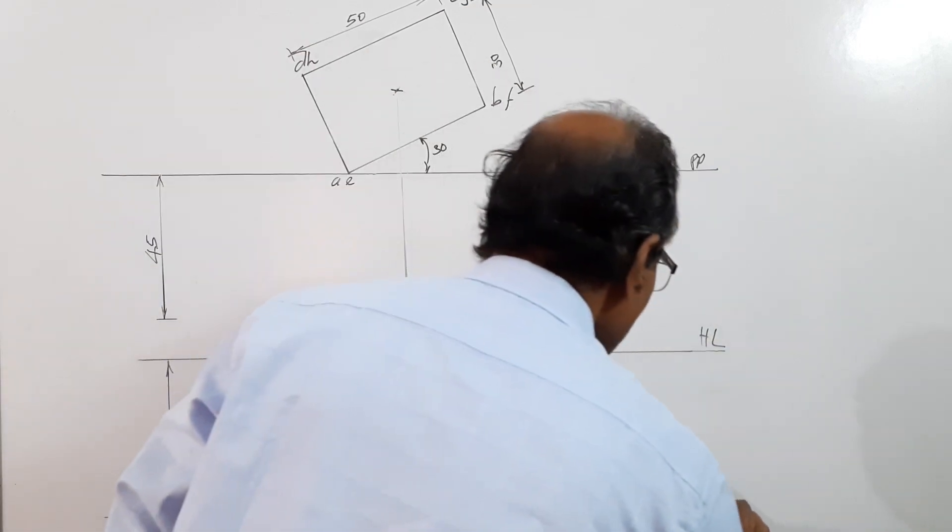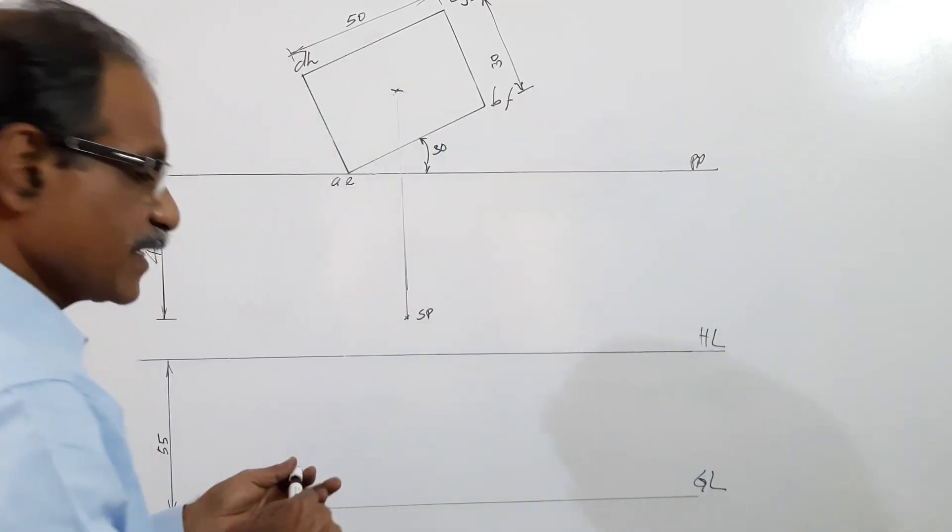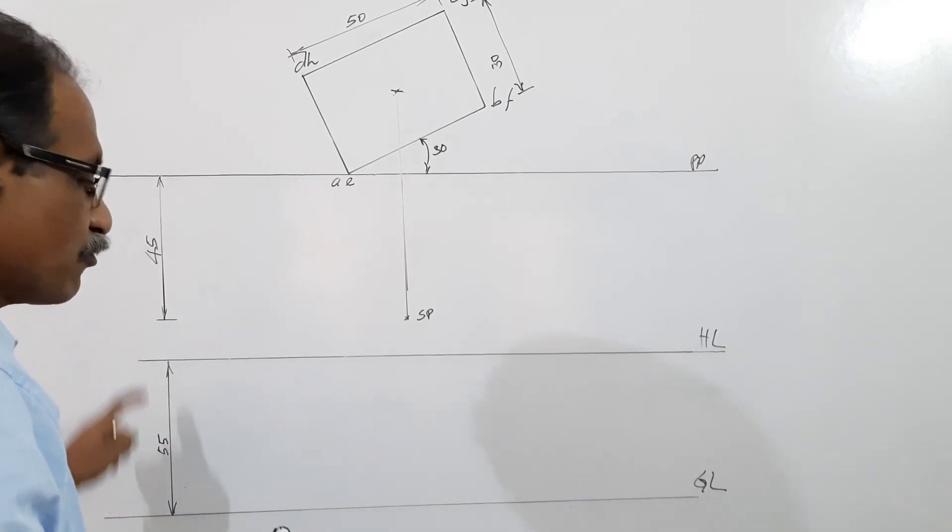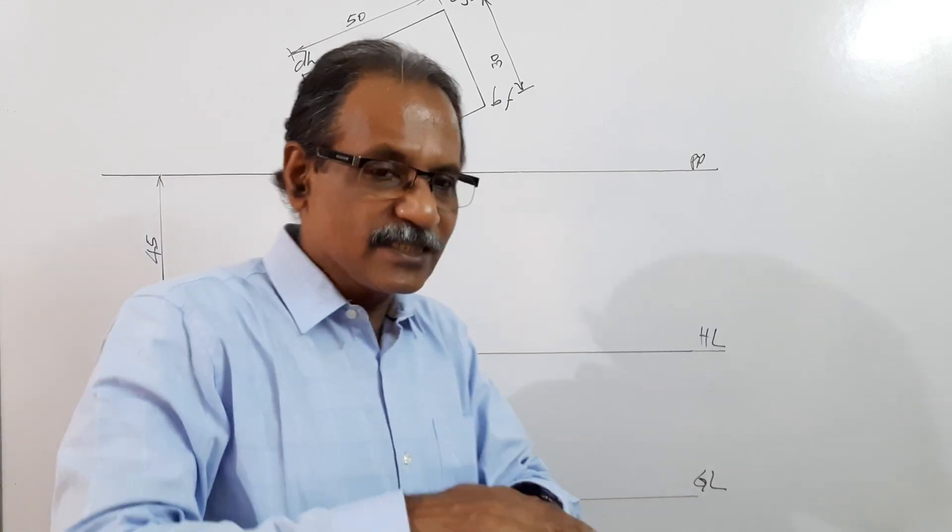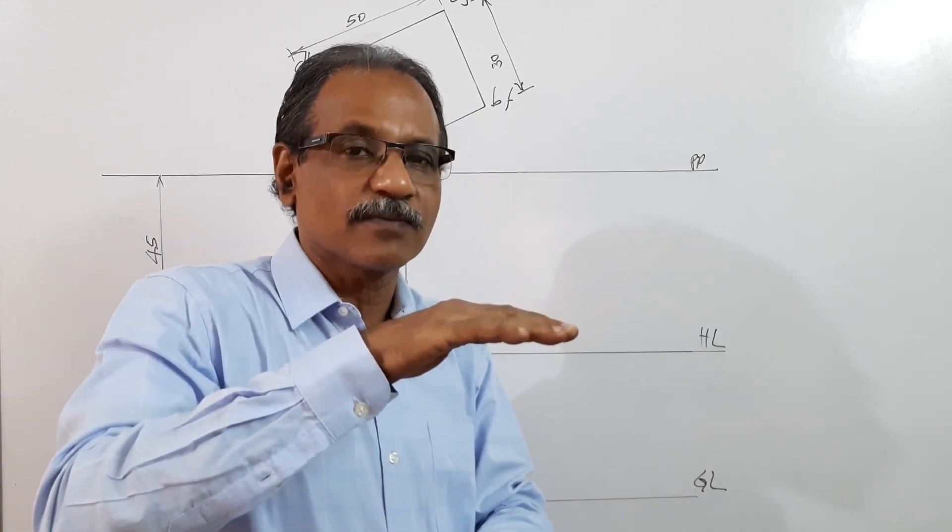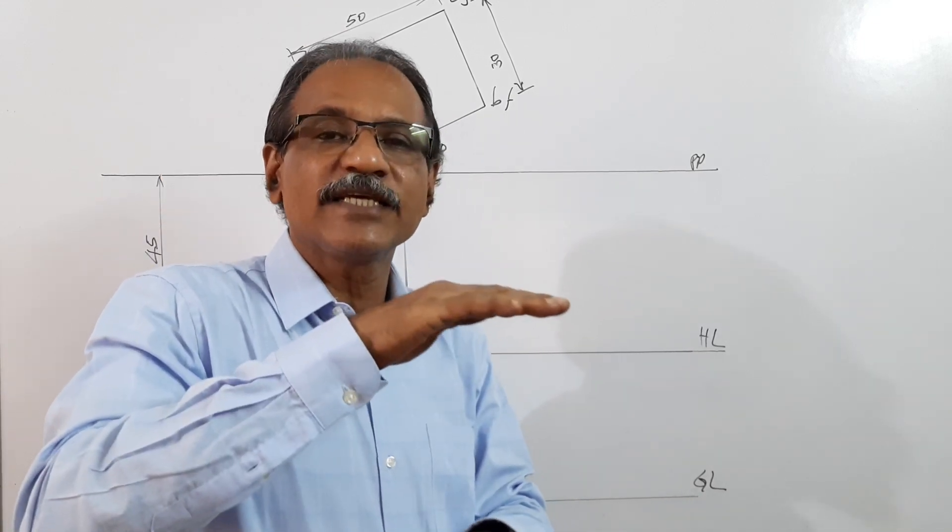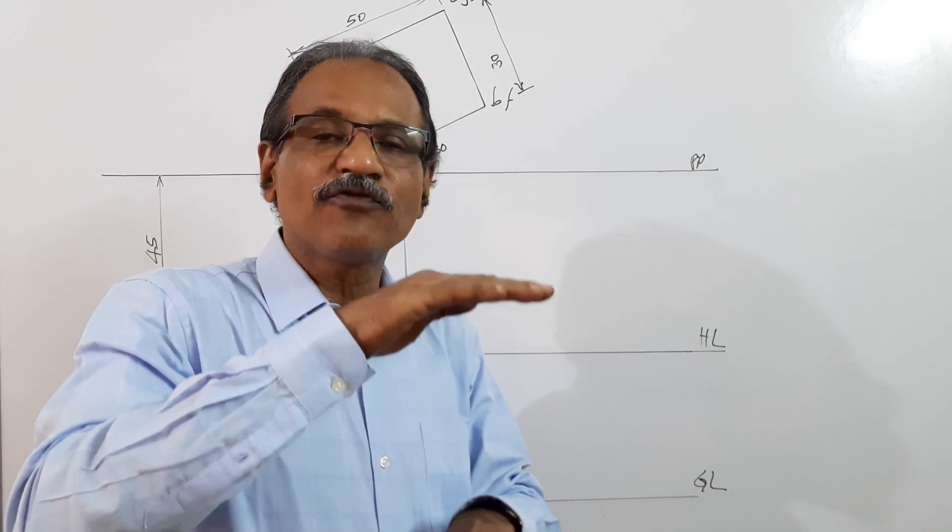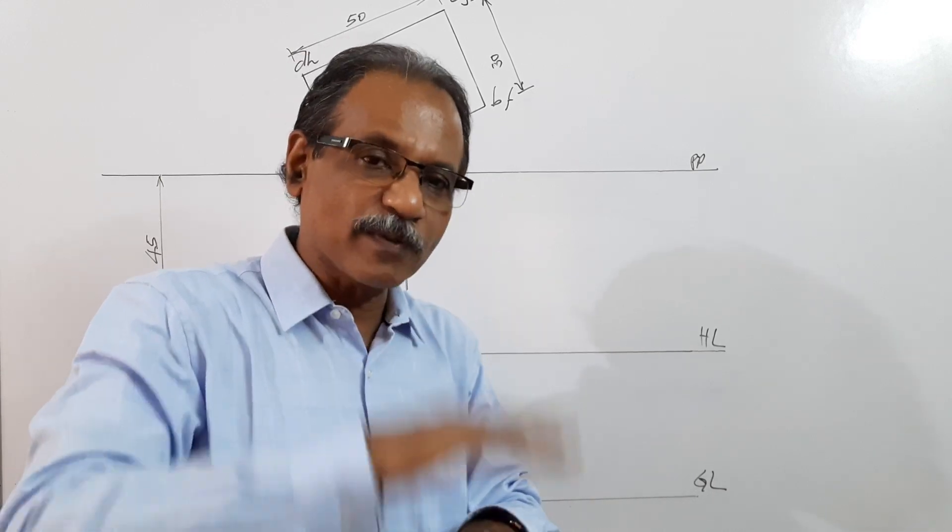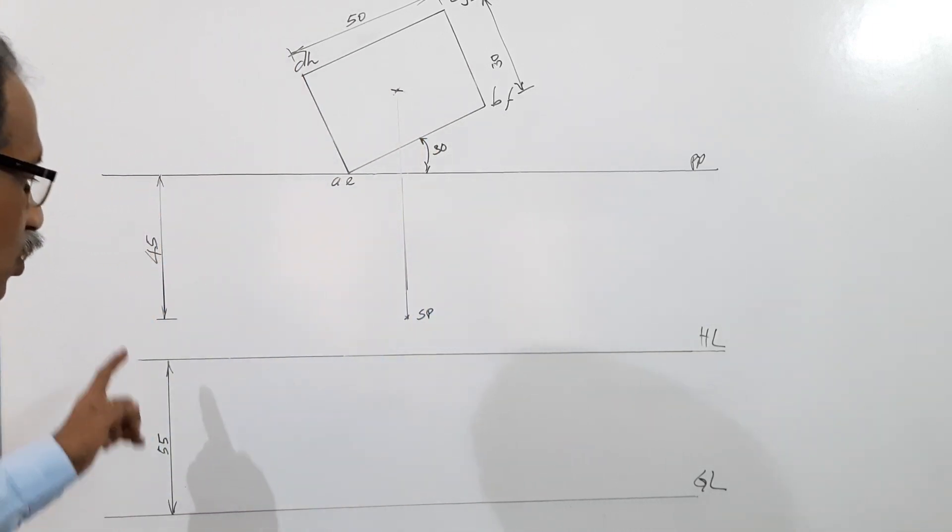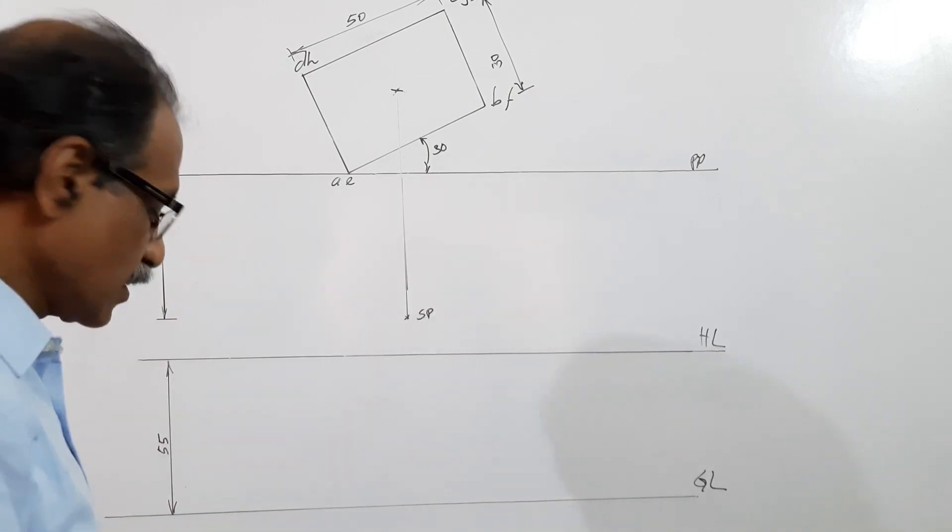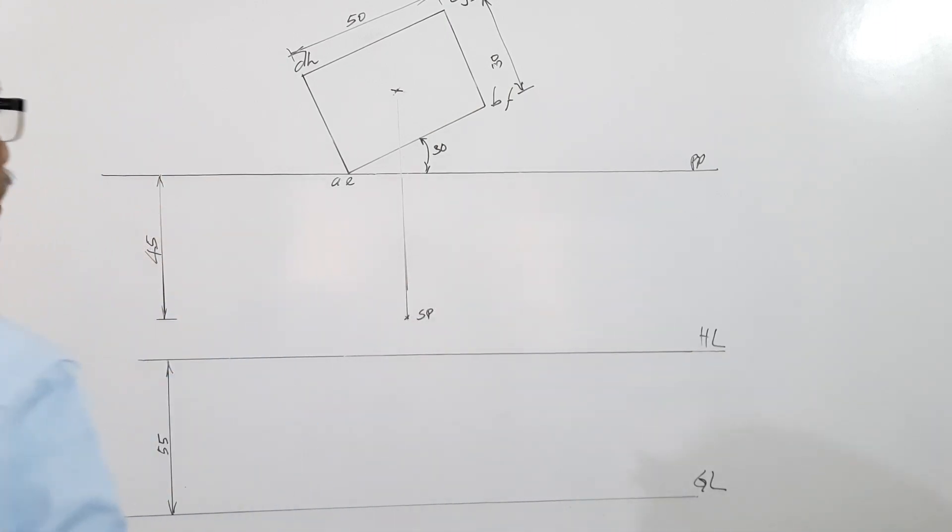Then I draw HL anywhere and GL ground line. This is horizon line, this is ground line. Ground line 55 mm below HL. What is the significance of 55? HL GL height is the height of the observer, or HL GL height is equal to the location of the eye of the observer with respect to the ground. It is given as 55, so 55 mm below HL I have located GL. So the basic drawing is over.